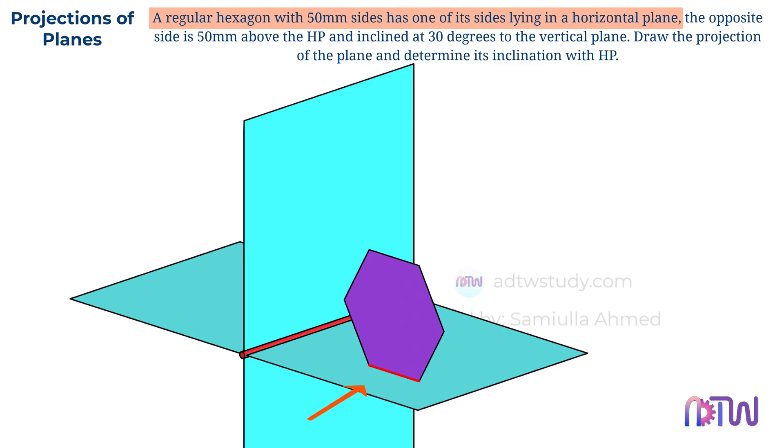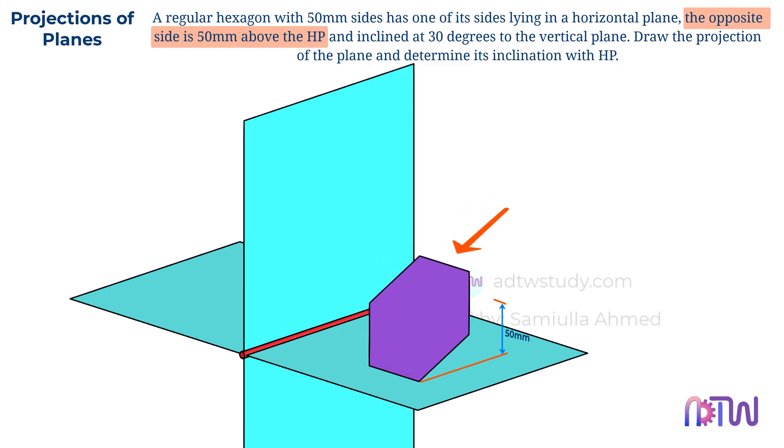The instructions also say that the opposite side is 50mm above the HP. What does this mean? The opposite side of the hexagon, which is this side, is 50mm above the horizontal plane like this.